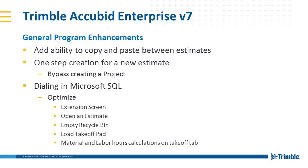Moving to general program enhancements, we've added the ability to copy and paste between estimates. This was a highly requested feature and one that took a fair bit of programming to make sure that specs, job items, and other variables are copied, pasted, and even created in the new estimate appropriately. We also changed bid creation so that a new estimate will automatically create a project with the same name unless you wish to use the standard project creation method. This will help you start estimating similar jobs with fewer keystrokes.